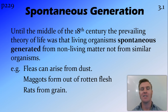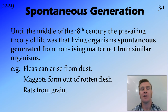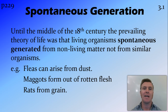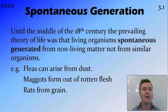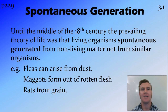So first up, spontaneous generation. Pretty much until these guys came along, the prevailing theory was that living organisms just magicked themselves out of nothing. So we had living matter coming from non-living matter. For example, fleas magicked out of dust, maggots magicked out of rotten meat, and rats magicked out of grain. This kind of made sense at the time — if you left a bag of grain out in your kitchen or shed for a period of time, eventually there'd be rats in it, so obviously the grain is turning into rats.